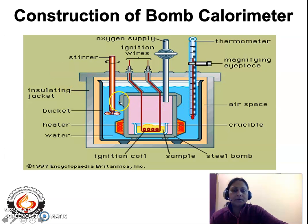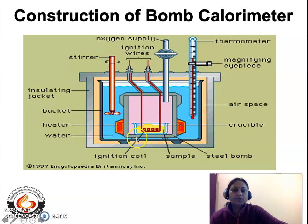The bomb is covered with a lid that tightly covers the bomb, and the lid is equipped with valves for the entry of electrodes. These two electrodes can be seen as red lines entering the bomb. Between the two electrodes there is an ignition coil made of magnesium wire. A crucible made of either steel or fused silica is placed inside the bomb, and this crucible contains a definite amount of fuel for which the calorific value has to be determined.